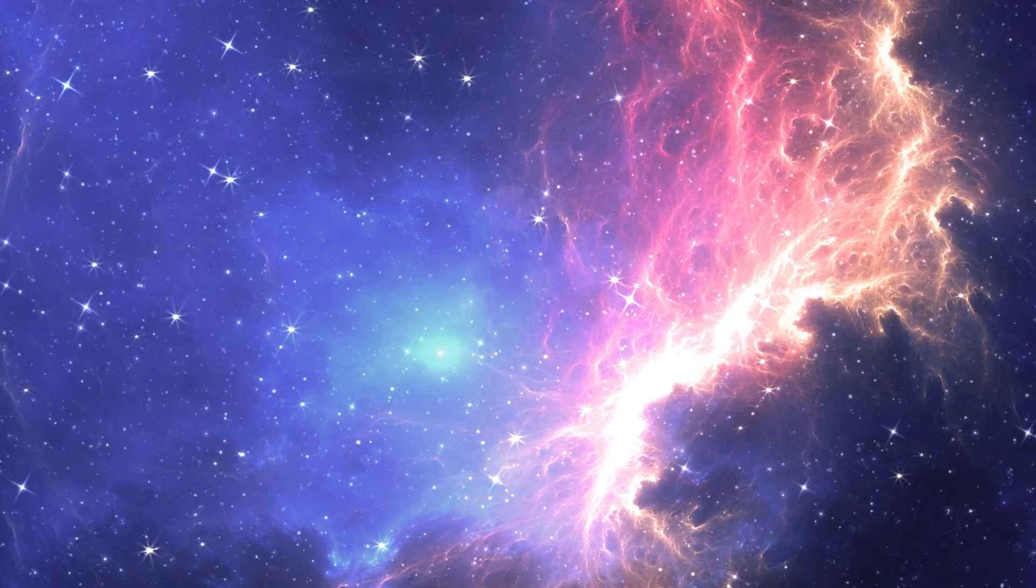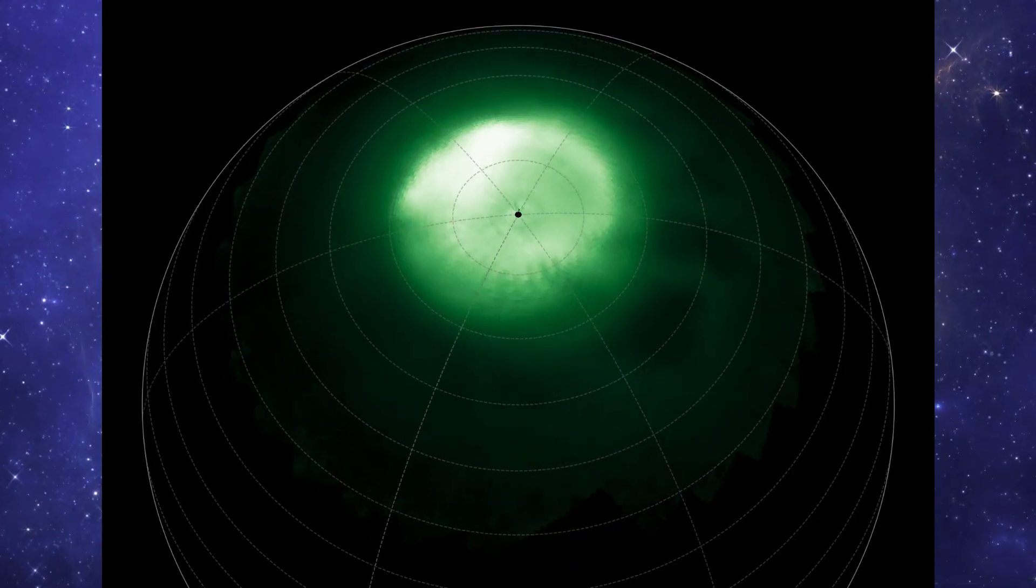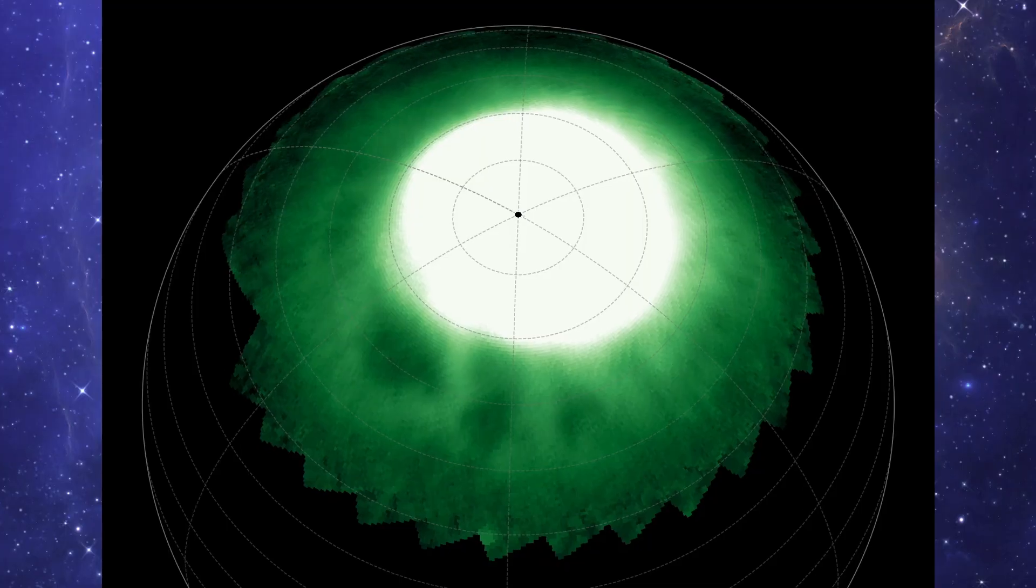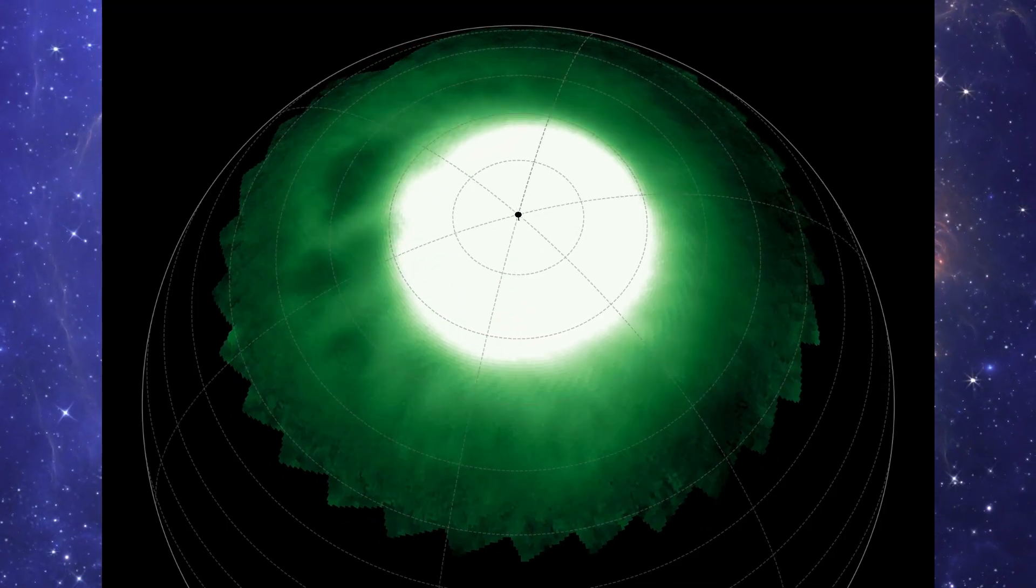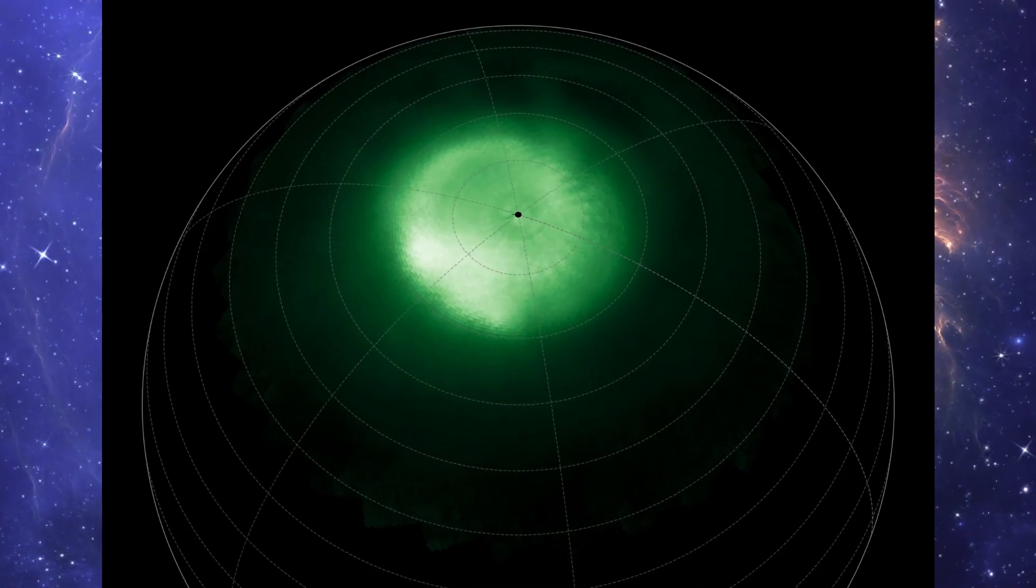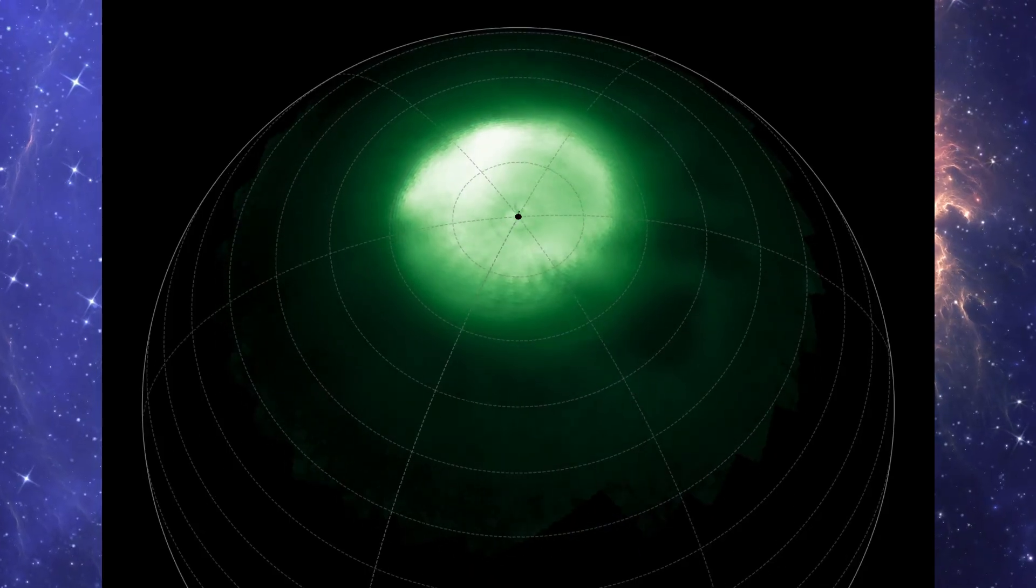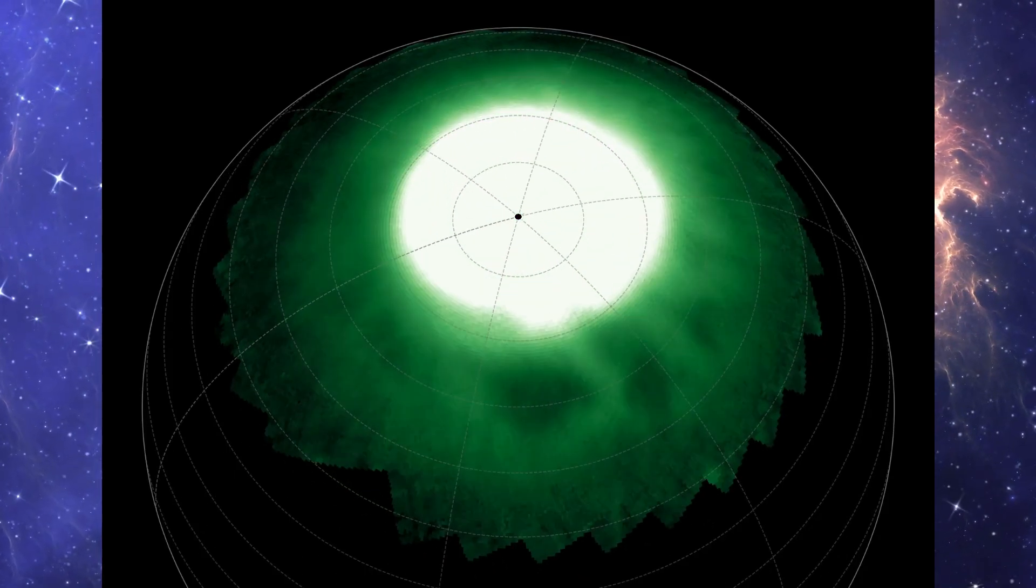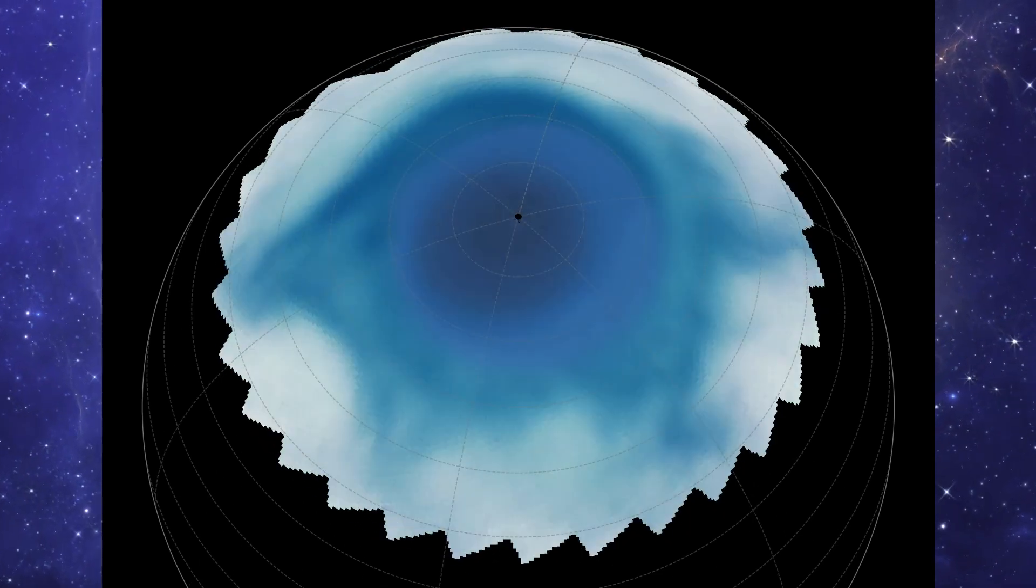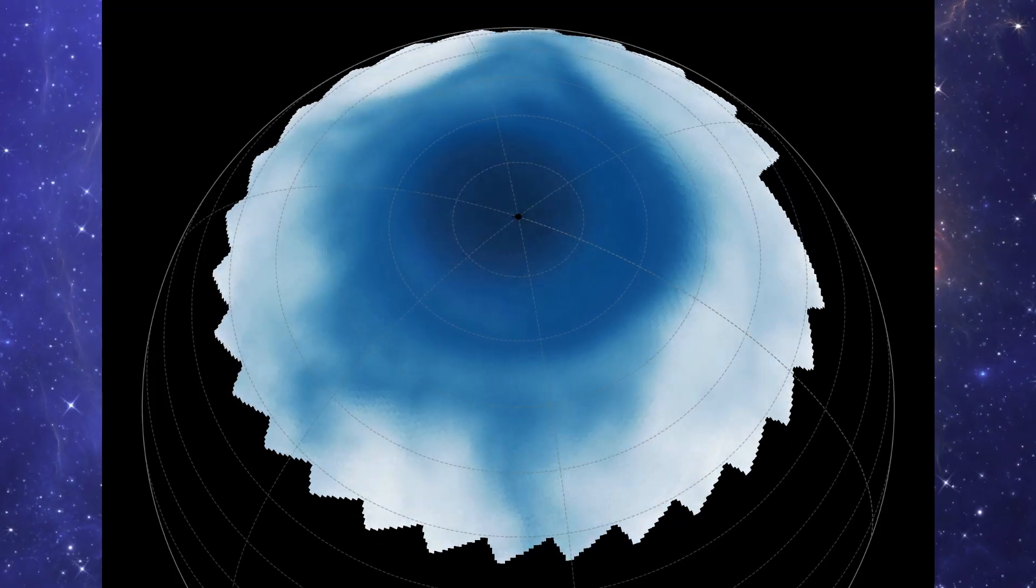And then came the real surprise. Webb detected mysterious, dark, bead-like structures drifting in Saturn's ionosphere. Lined up above a warped, star-shaped pattern lower in the stratosphere. The two seem to echo each other, vertically aligned, as if connected. Yet no model predicts such a thing. For a world we've studied for centuries, Saturn suddenly feels alien again. Webb reminds us that even in our own solar system, there are still riddles waiting in plain sight.